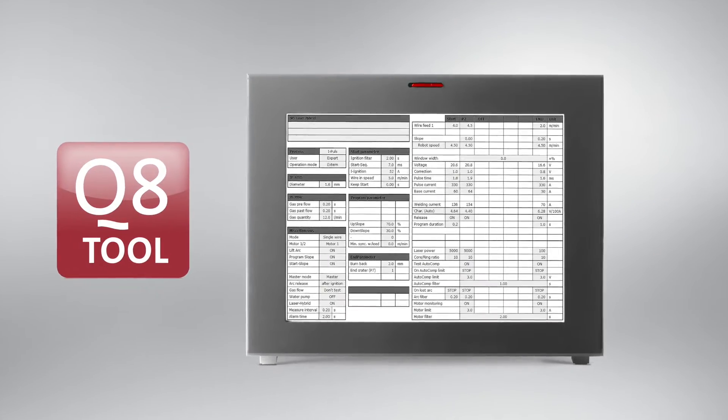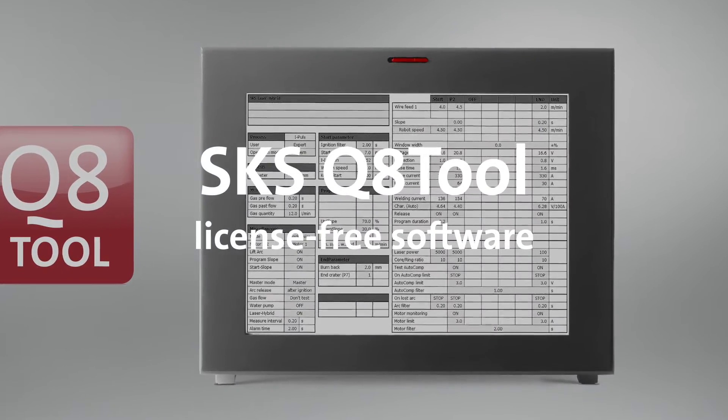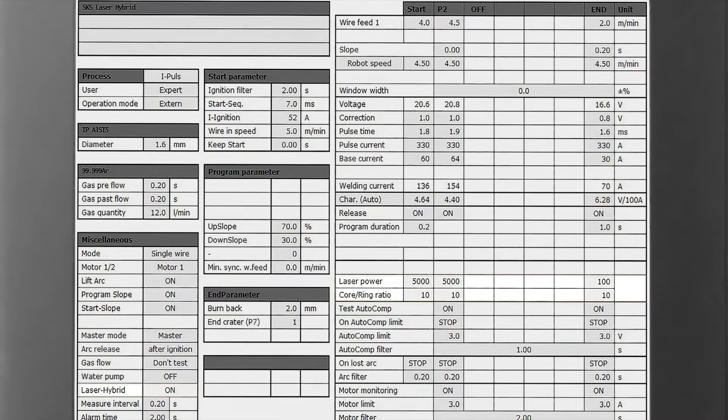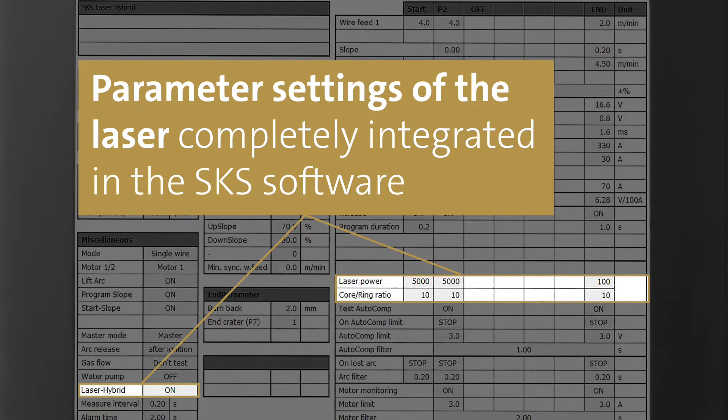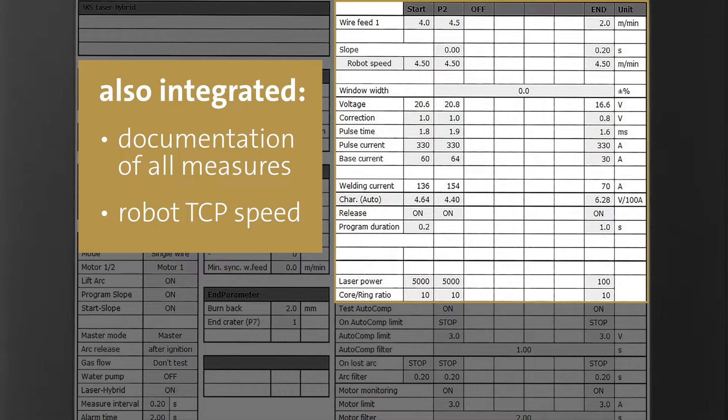Simple programming and process control. Everything in view with the license-free software Q8 tool. The parameter settings of the laser are completely integrated in the SKS software, as well as the documentation of all measures and the robot TCP speed.